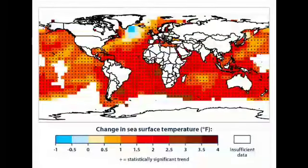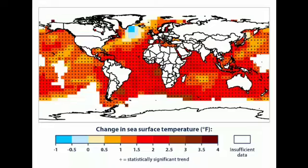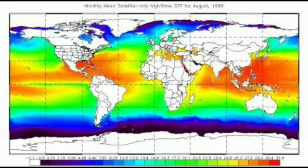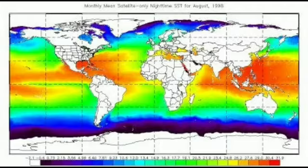The Gulf Stream is the largest of the western boundary currents of the North Atlantic Ocean. It is a warm current and originates in the Gulf of Mexico. The current flows northwards along the east coast of North America. Near Newfoundland, its water mixes with that of the cold Labrador Current, resulting in the formation of dense fog. It then comes under the influence of the westerly winds and flows north-eastwards as the North Atlantic Drift. Its warm waters keep the Norwegian coast ice-free even during winters.